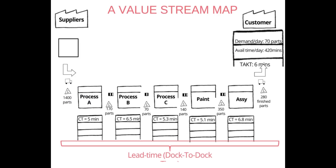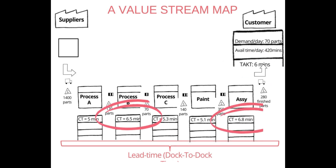Now we'll go to a stripped-down value stream map. You can see that in the top right, TAC time is 6 minutes. Every cycle time in the process must be below that. In this case you can see the process speed in assembly will have a problem.